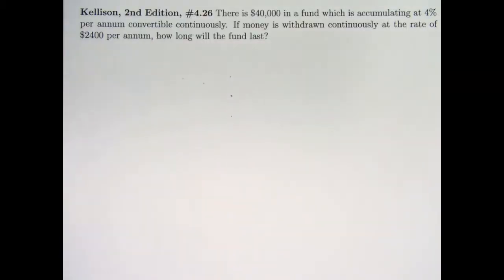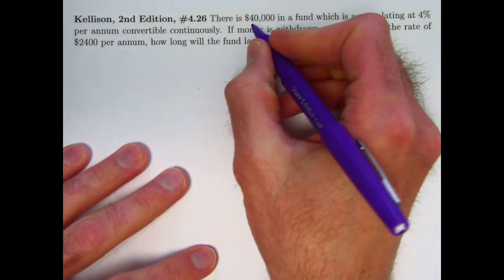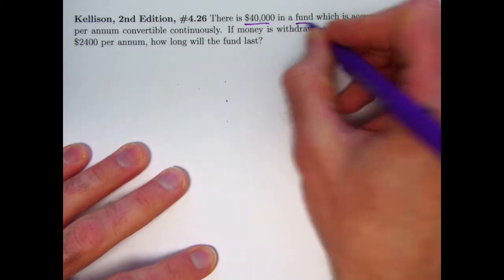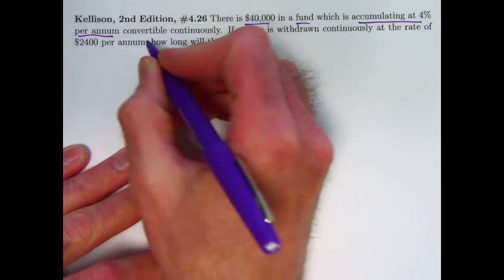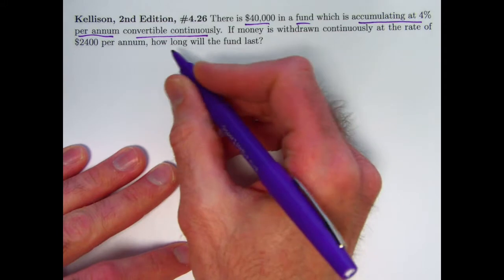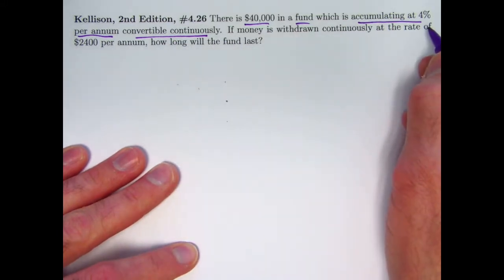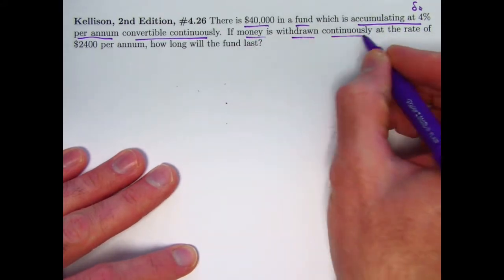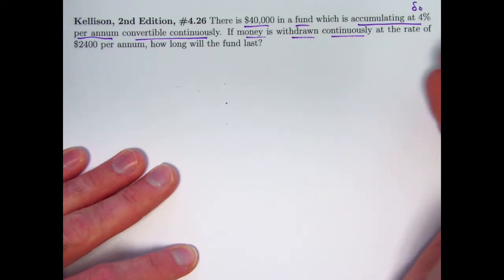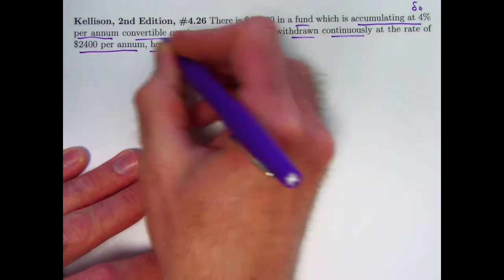Here is the problem statement. Kellison does tend to use dollars, so we'll go ahead with his statement here. There's $40,000 in a fund, and that's accumulating at 4% per annum, which means per year. Convertible continuously, that means the interest is compounding continuously. It really means the 4% is a force of interest. We have talked about force of interest before, delta. This is delta. If money is withdrawn continuously, every second of every day, every millisecond of every day, at a rate of $2,400 per annum, again, that means per year, how long will the fund last?